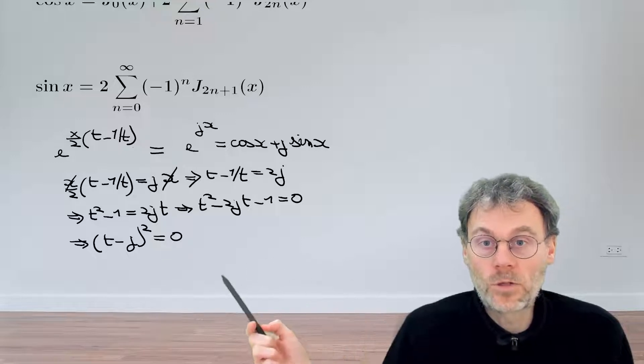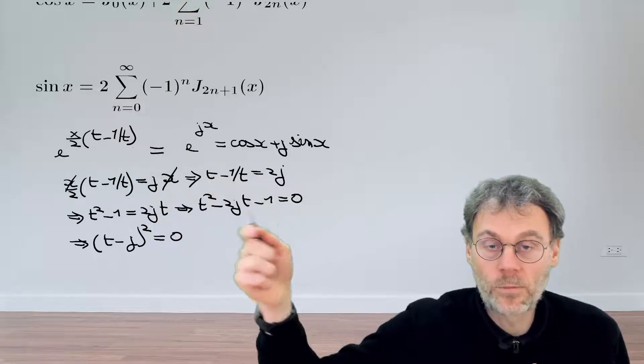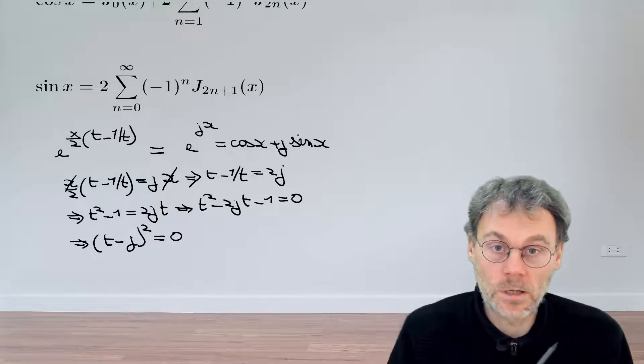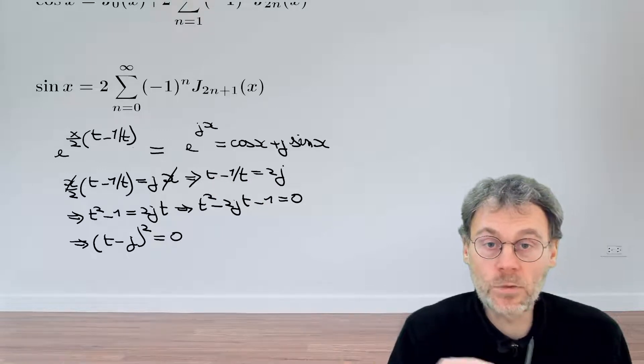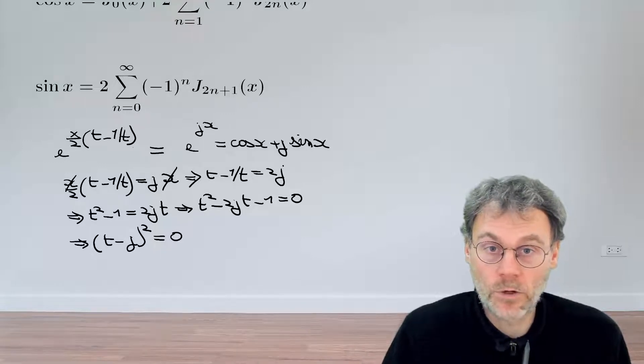So if we substitute j for t in our generating function, we get something that's very promising to help us prove this theorem. In case this was the hint that was missing, pause the video and take the next steps for yourself.